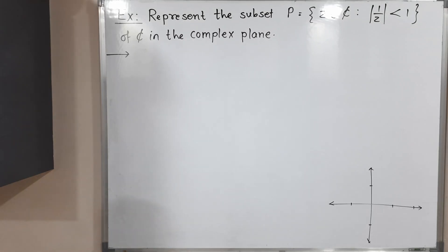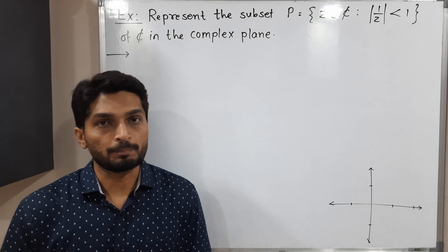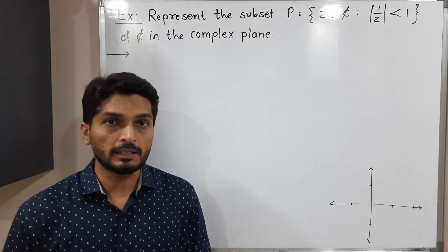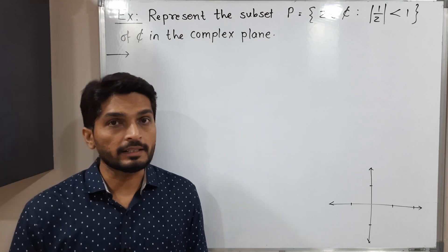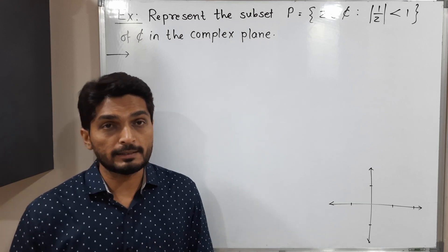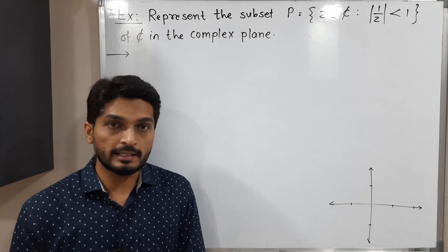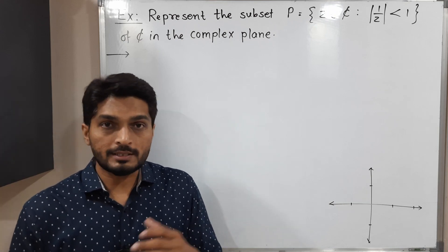Hi everyone, in this video we are going to discuss this example. Here we have a set P which is a subset of complex numbers, and we have to represent it in the complex plane. Basically, P is a collection of complex numbers which satisfy the condition |1/z| < 1.